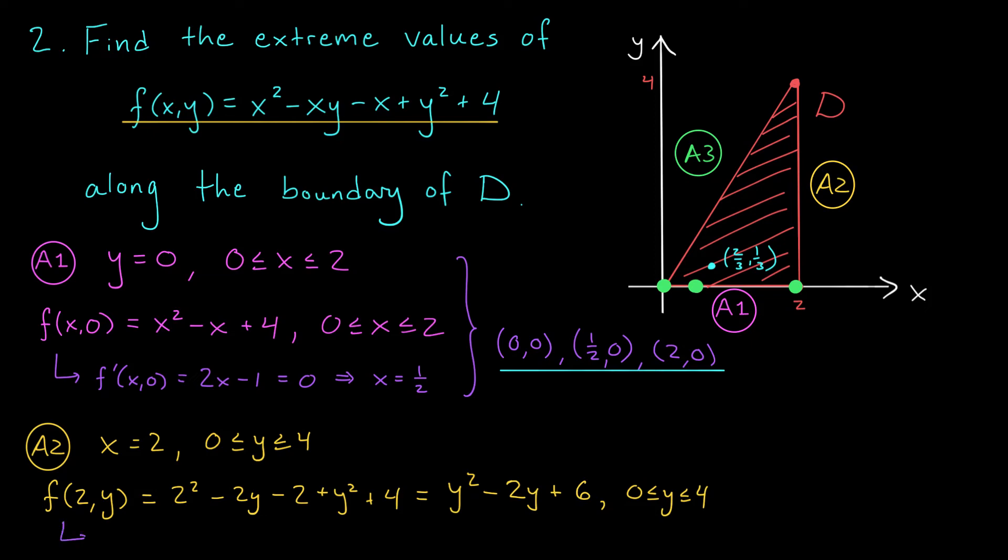To find our critical points, we look to our derivative. f'(2,y) is 2y minus 2. Now, this exists everywhere, and it's equal to 0 when y is 1.